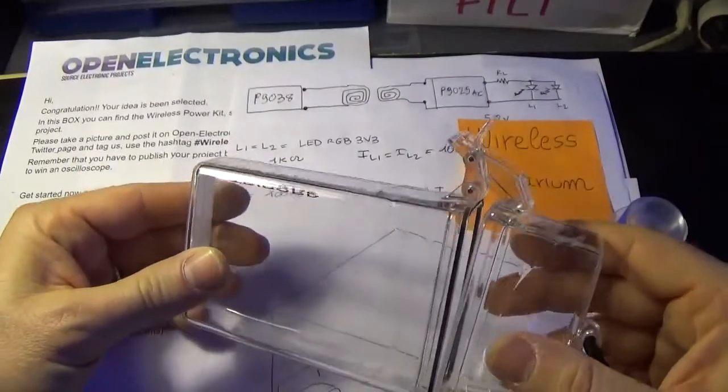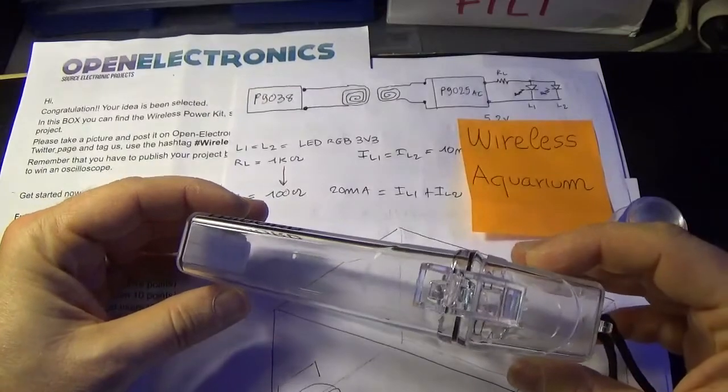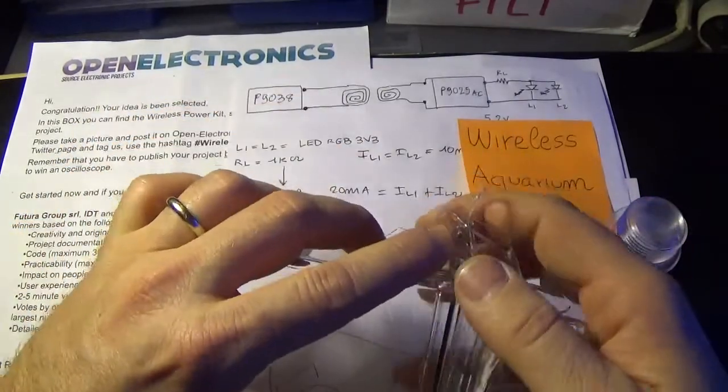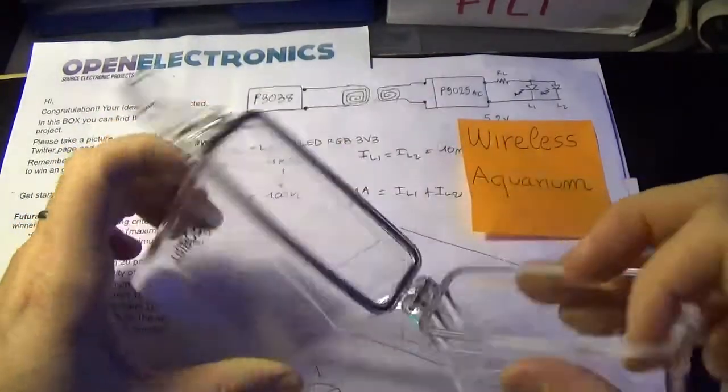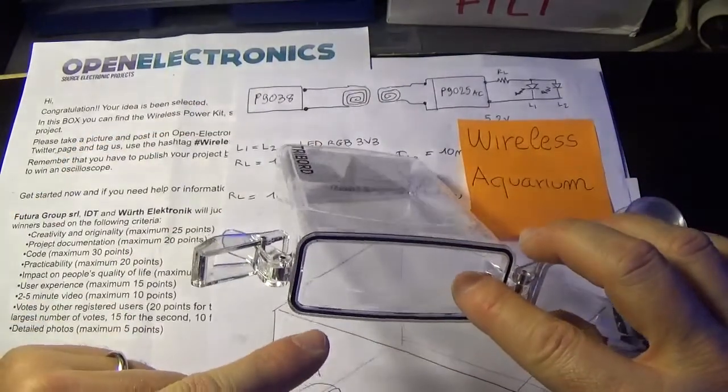So you can put it up to one meter out in the water, and in this box I will put the receiving antenna and the circuit that will supply the light.